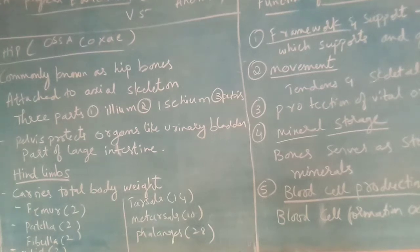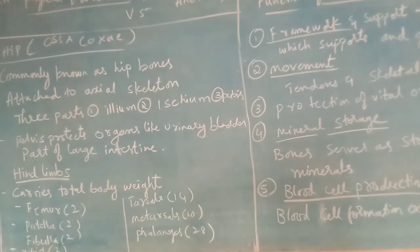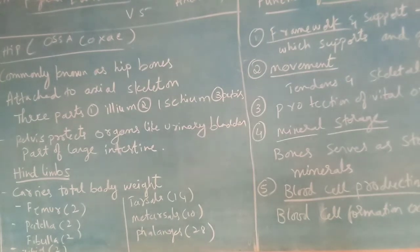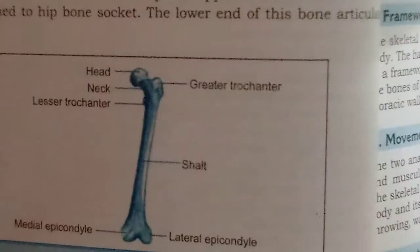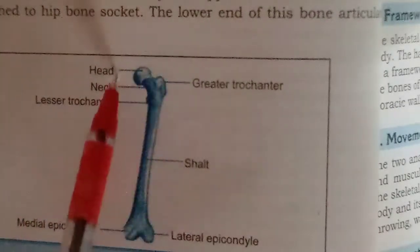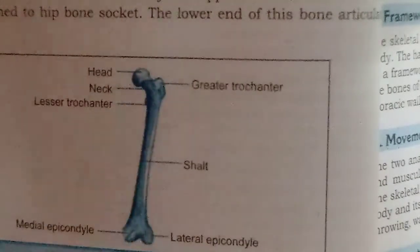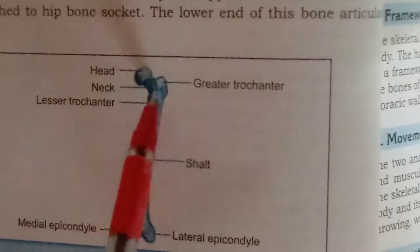First is the femur — we have two, one in each leg. It is the strongest and heaviest bone in the body. You can see in the diagram that the upper part of the femur has a head, neck, and lesser trochanter. This upper part has a ball-like structure that is attached to the hip bone — the ball-like structure fits into the socket of the pelvis.